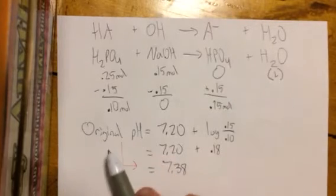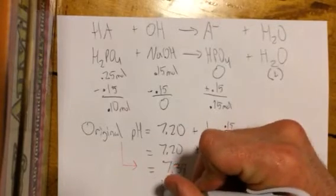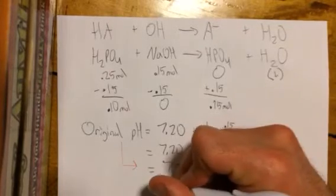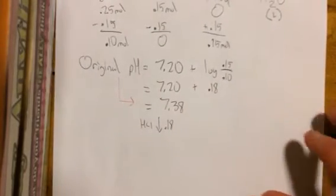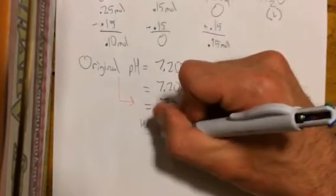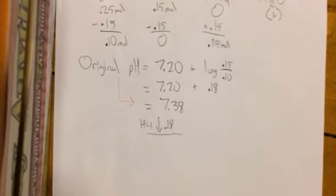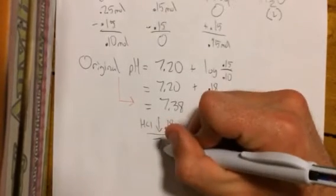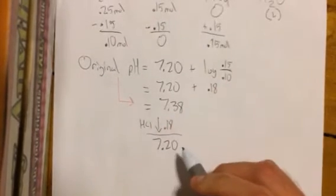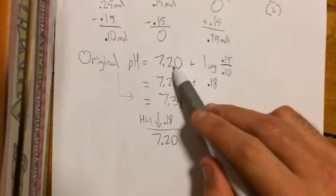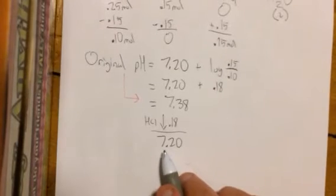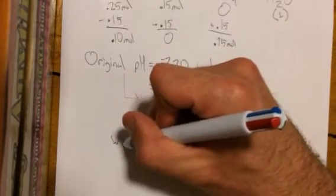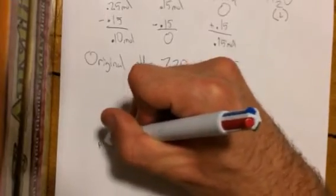So the 0.18 is going to drop the original pH by 0.18 because of the HCl. And that gives us 7.20, which you'll notice is also the same number up here, which helps a lot in this problem. So this is the pH that we want: the pH we want is 7.20.